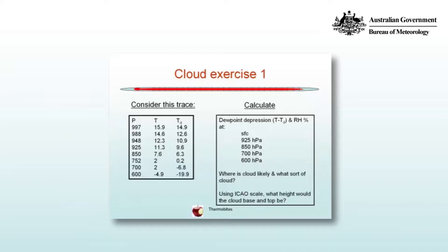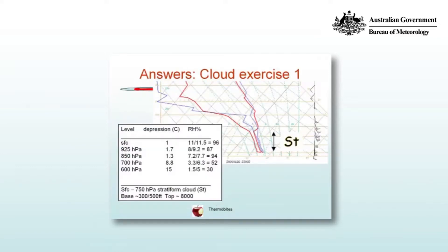So what did you find? Here's the actual trace in red for the day. You can see there's a small dewpoint depression in the lower part of the troposphere. The calculated values you should have found are 1 degree at the surface, 1.7 at 925, and 1.3 at 850 hectopascals. Then the profiles come sharply apart above that — nearly 9 degrees at 700, and 15 degrees at 600 hectopascals.